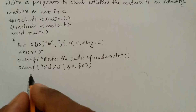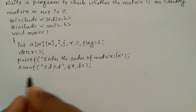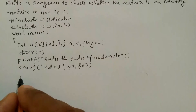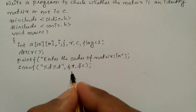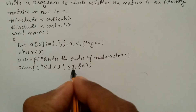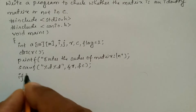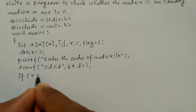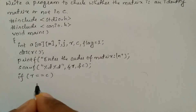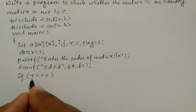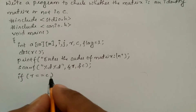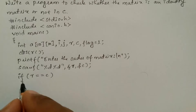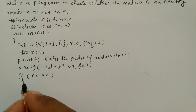Let us continue with checking the rows and columns. If the matrix is a square matrix, then only it is possible for us to identify whether the matrix is an identity matrix or not. That is the reason we have to check in an if condition: if row is equal to column. If the number of rows are equal to number of columns, then only it is possible for us to identify that it is an identity matrix or not.